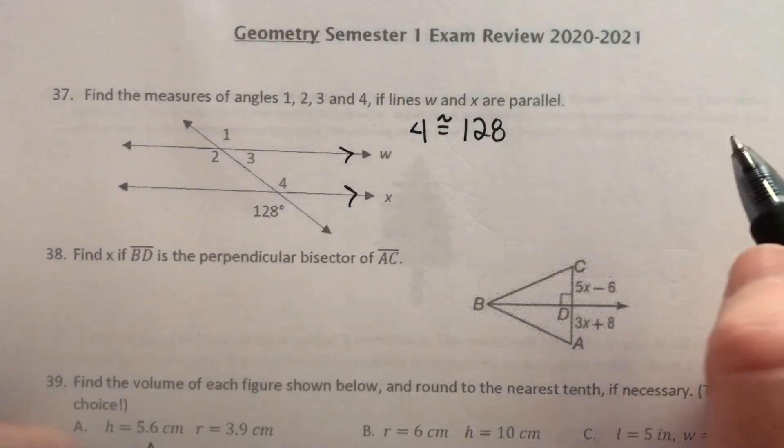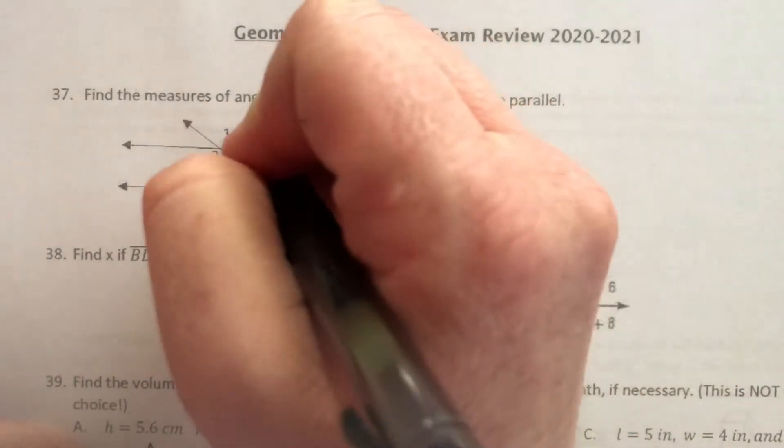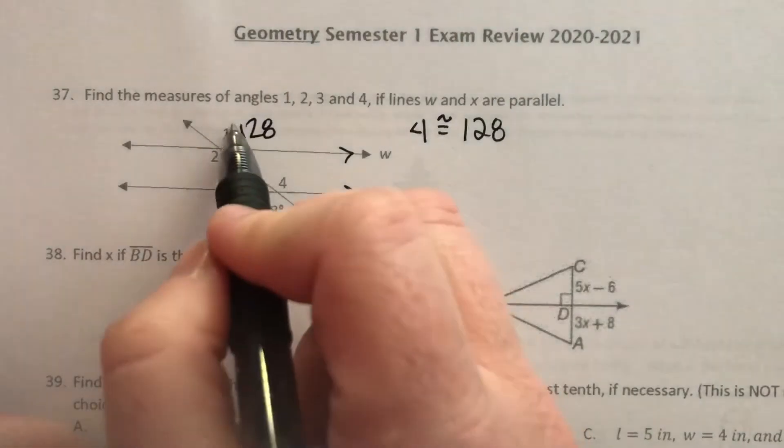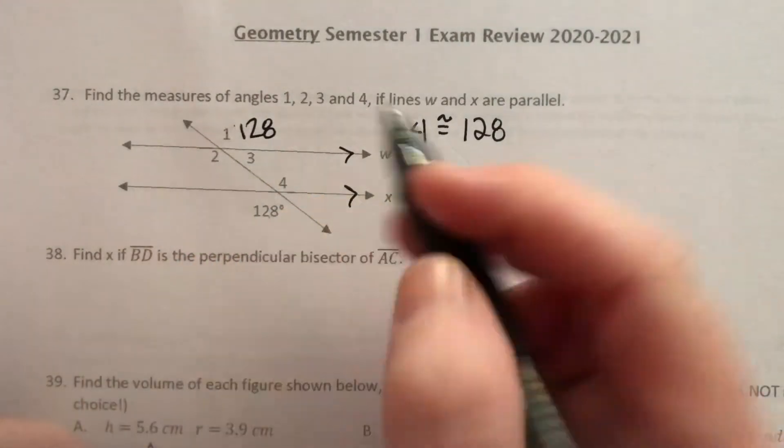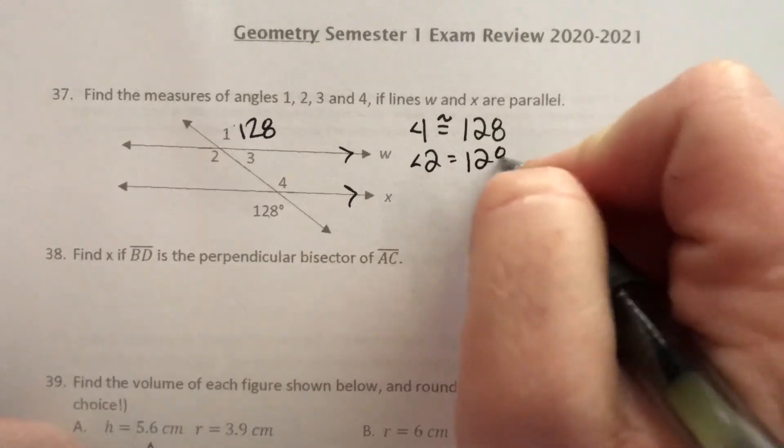And then all of the angles are either gonna be one of those or the other. There's only like two choices to pick from, right? So if angle 1 is 128, angle 2 is vertical to that. So it's also gonna be 128, they're congruent.